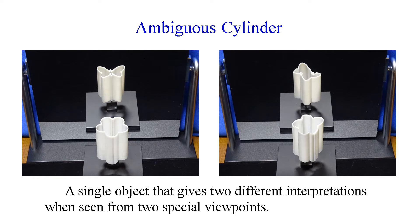An Ambiguous Cylinder is a cylinder-shaped object whose section has two different appearances when seen from two special viewpoints. The left image shows an example, which seems a flower, but in the mirror it changed to a butterfly.